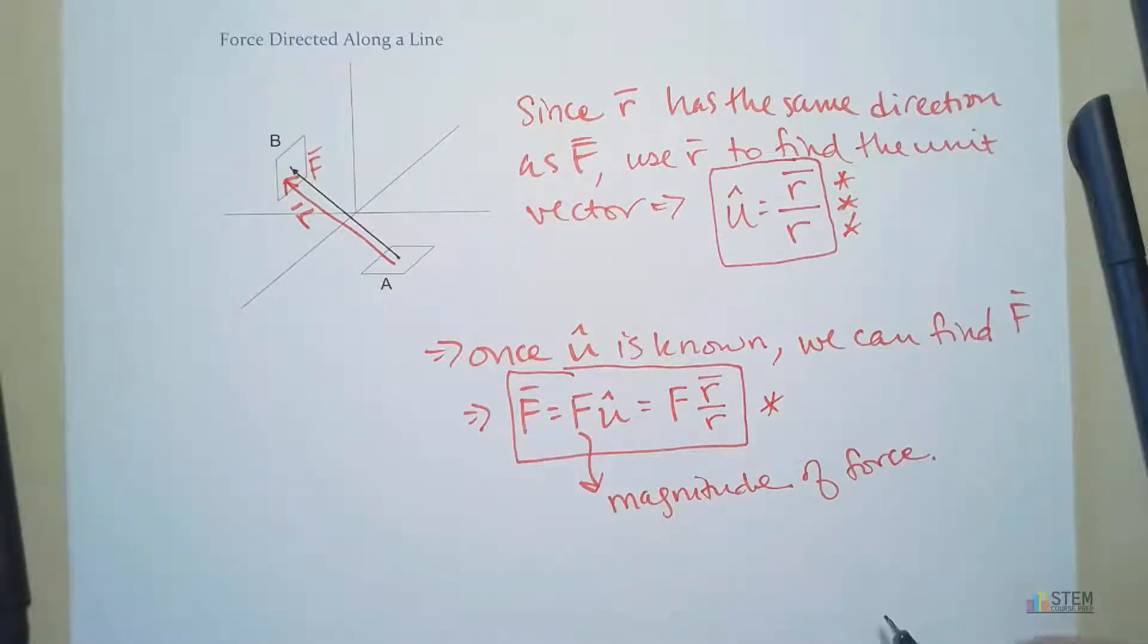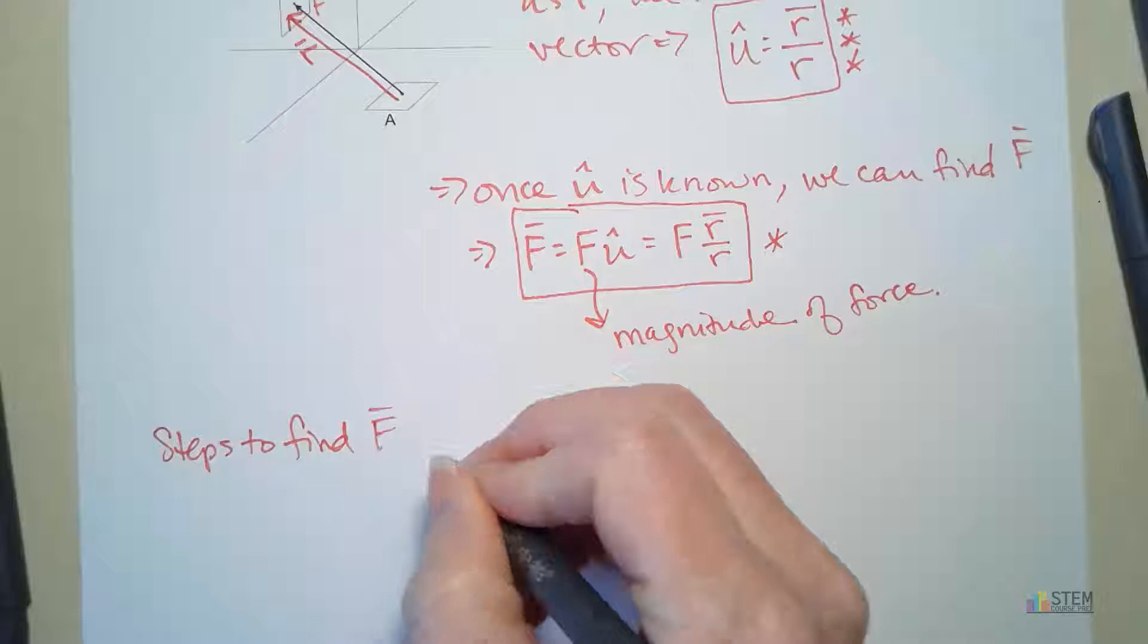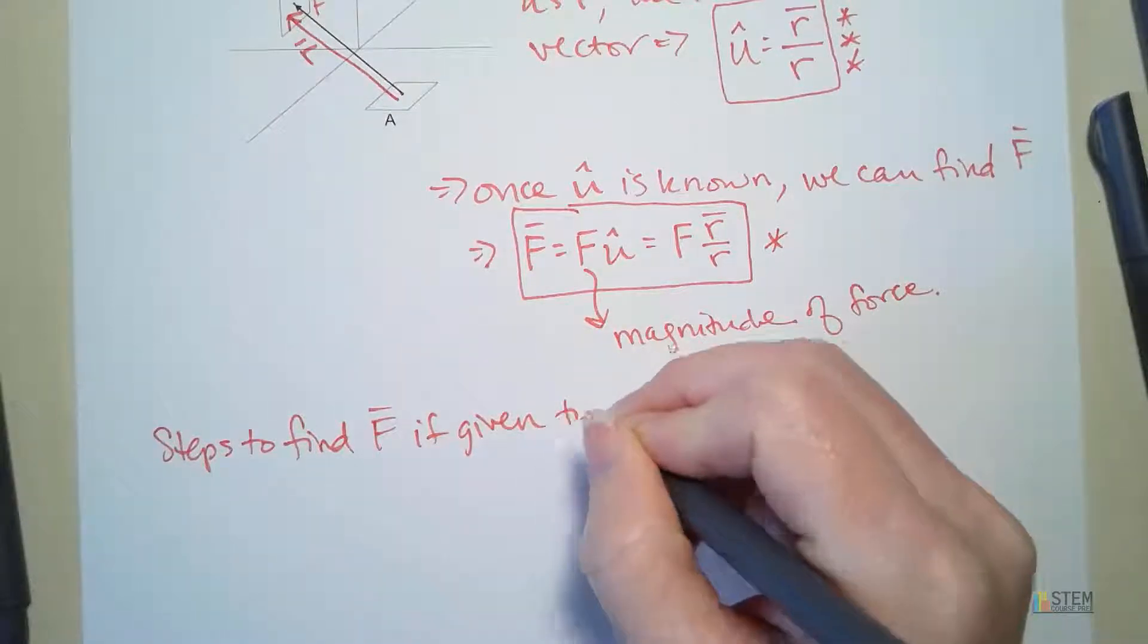So with that being said, if you think about it, our steps we would need to do to find this force vector if we were given two points. Let's write that down. So we've got our steps to find F if given two points.